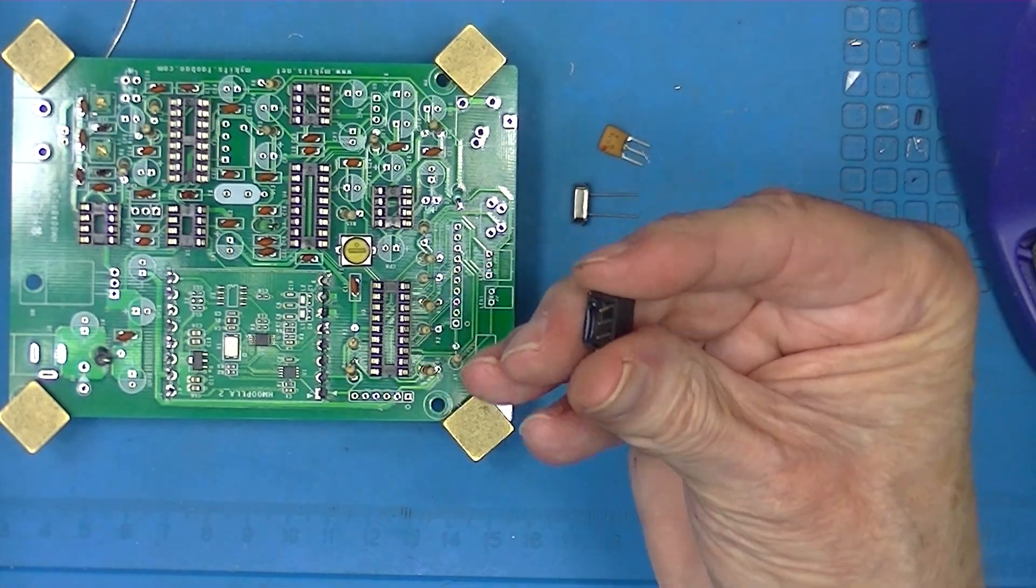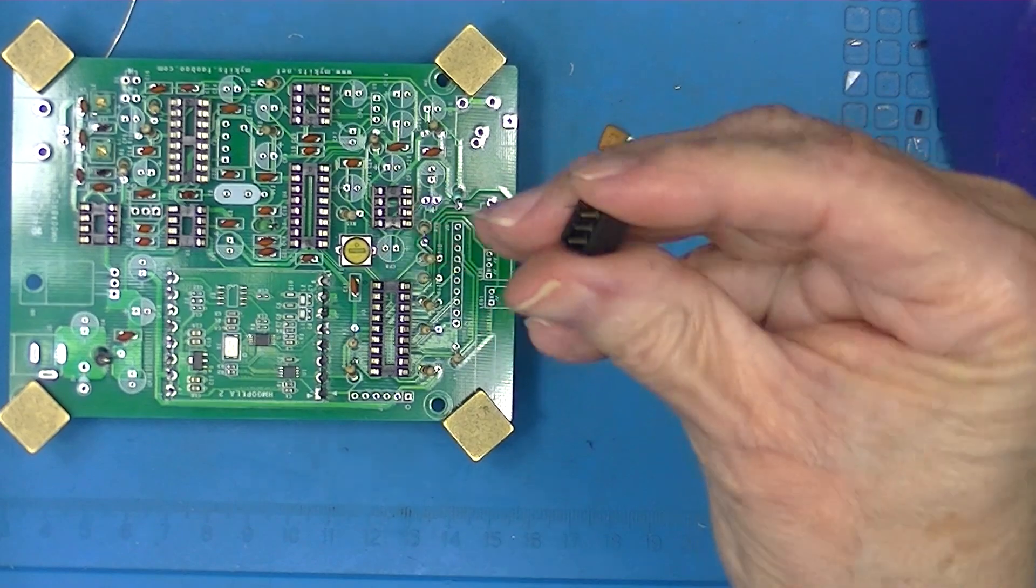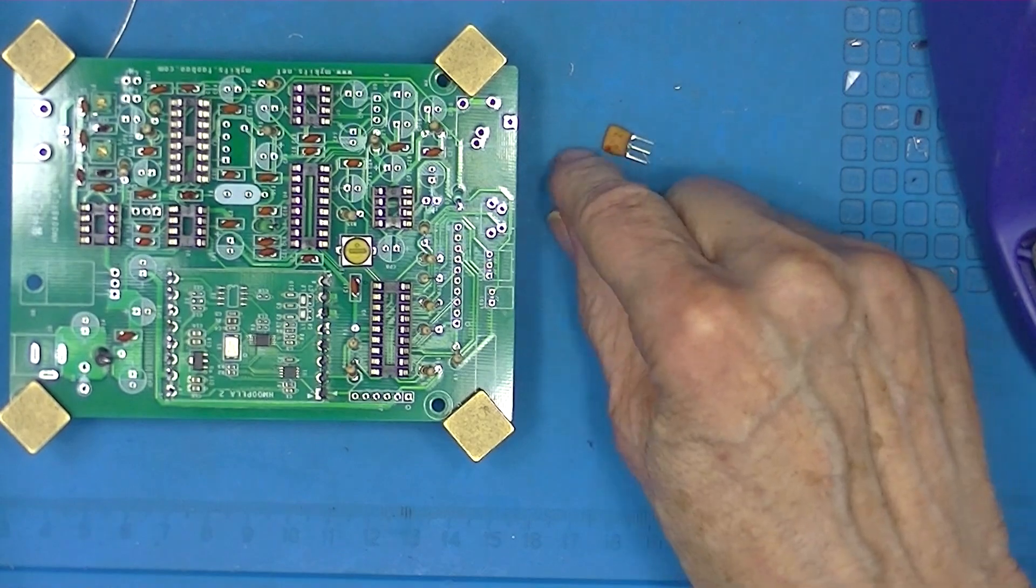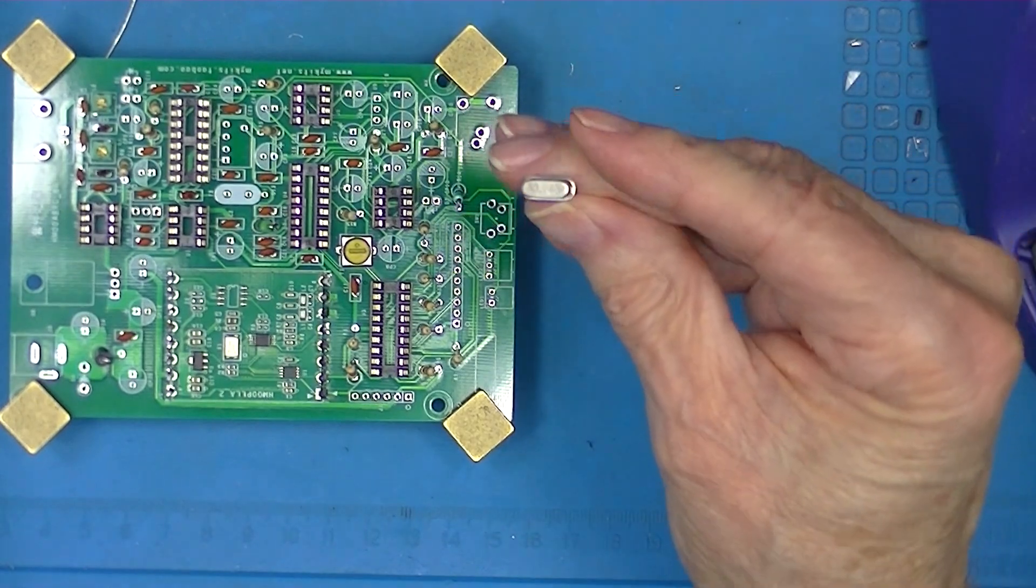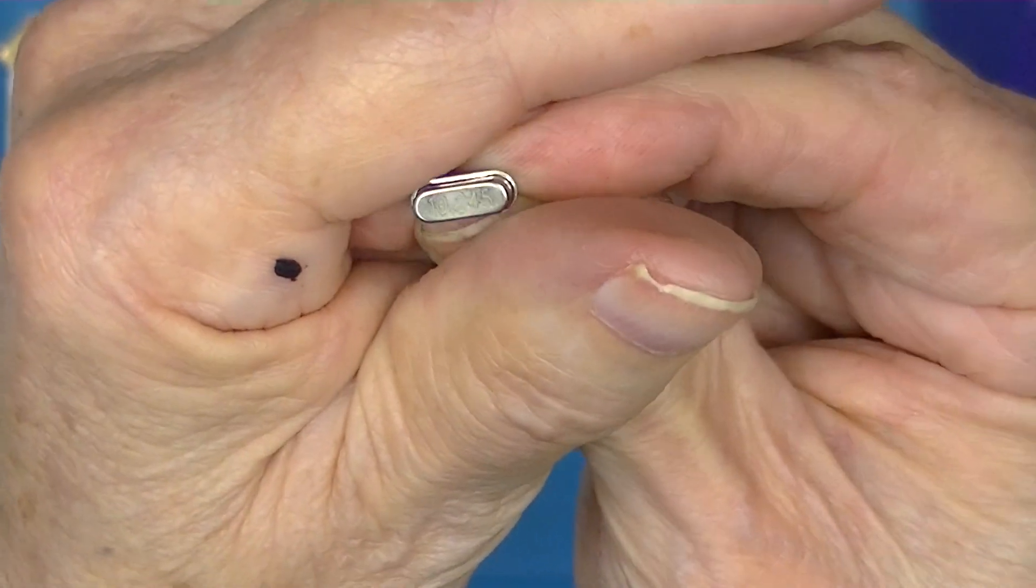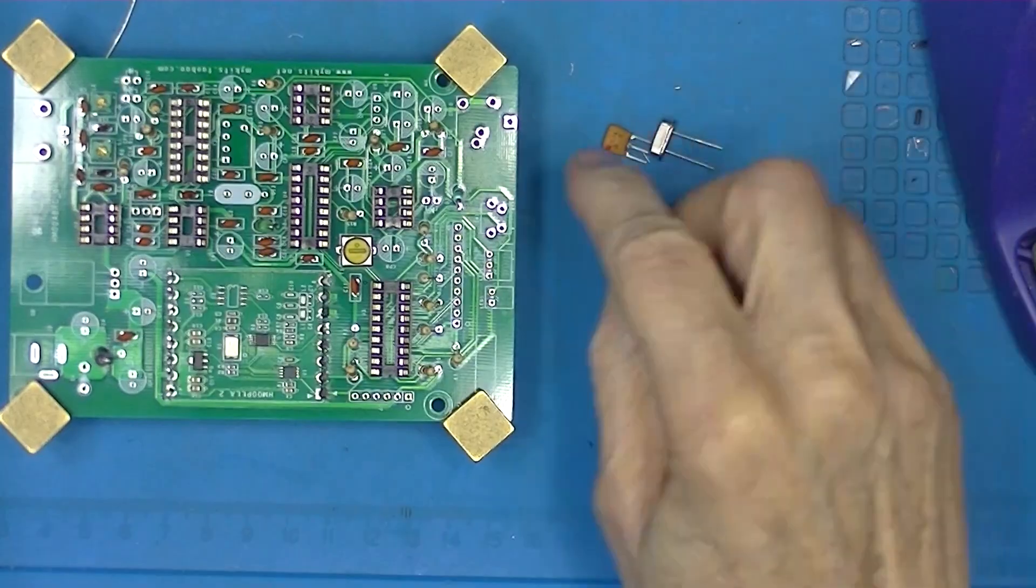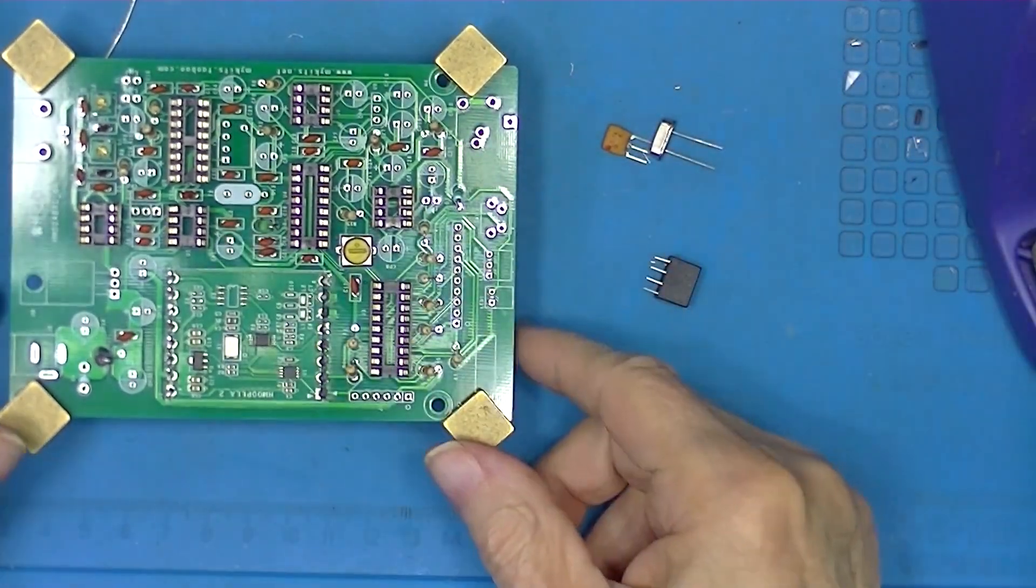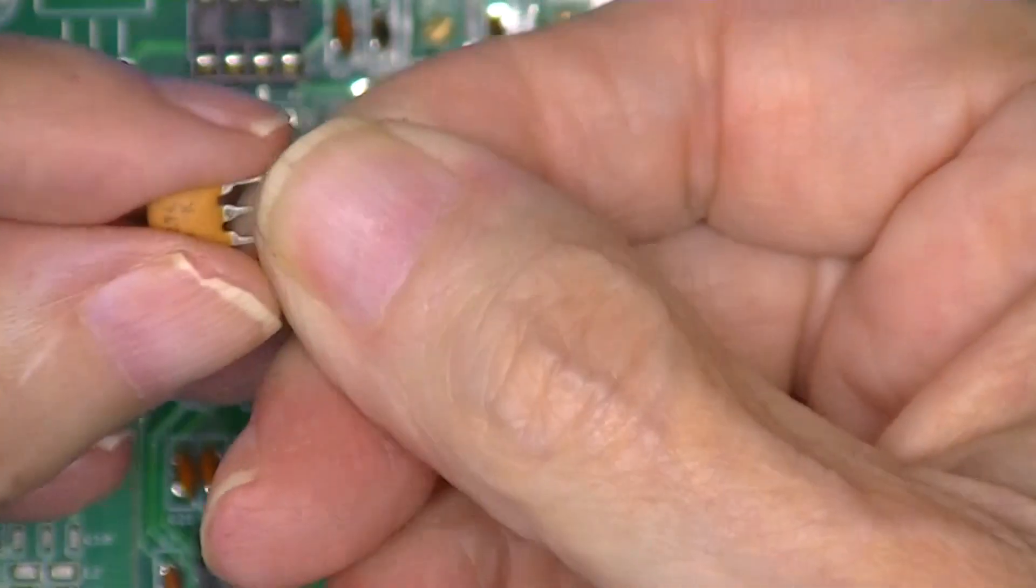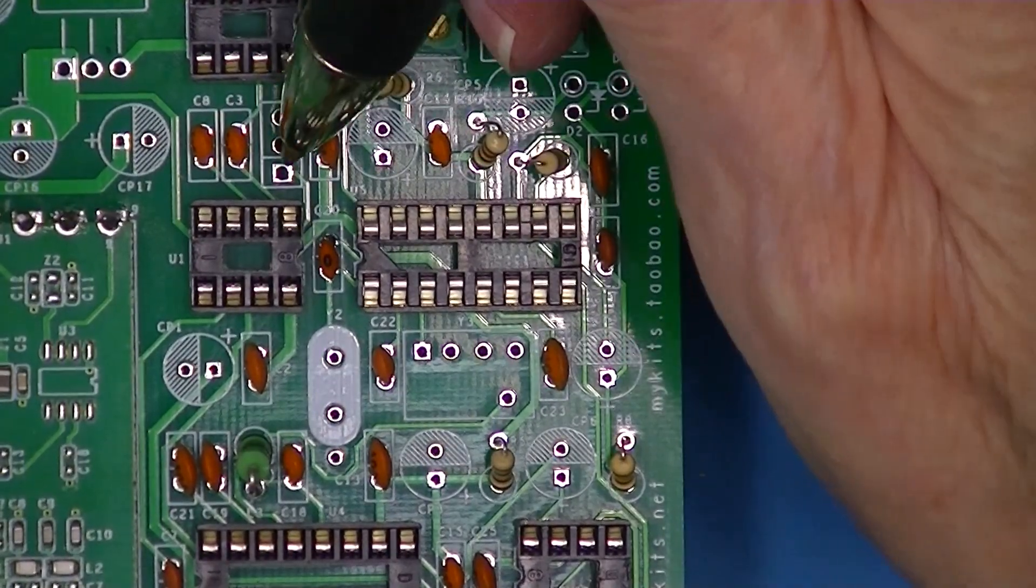The only thing is, this is a five-leaded fellow. He can't be installed incorrectly. I think he goes right there. The crystal is bi-directional. You can see it's marked with the frequency. No problem. This three-legged device with the red dot installs in these three holes right here.